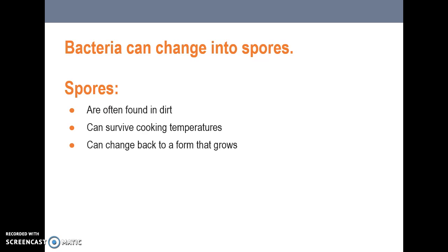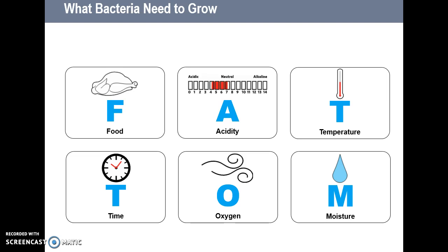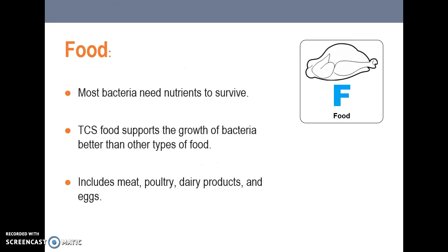So what do bacteria need to grow? The acronym FAT-TOM stands for food, acidity, temperature, time, oxygen, and moisture. Under food: most bacteria need nutrients such as carbohydrates and proteins to survive. TCS foods — time and temperature control for safety foods — support bacterial growth better than most other types. These foods include meats, poultry, dairy products, and eggs.